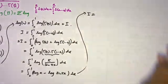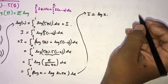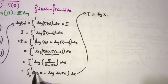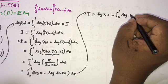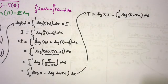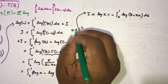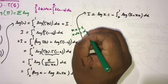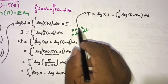Since natural log of pi is a constant, we pull it outside the integral. The integral of dx from 0 to 1 is 1, giving us natural log of pi. So 2I equals natural log of pi minus the integral from 0 to 1 of natural log of sine(pi·x) dx. For this remaining integral, we use the substitution t equals pi·x, so pi·dx equals dt. When x goes from 0 to 1, t goes from 0 to pi.